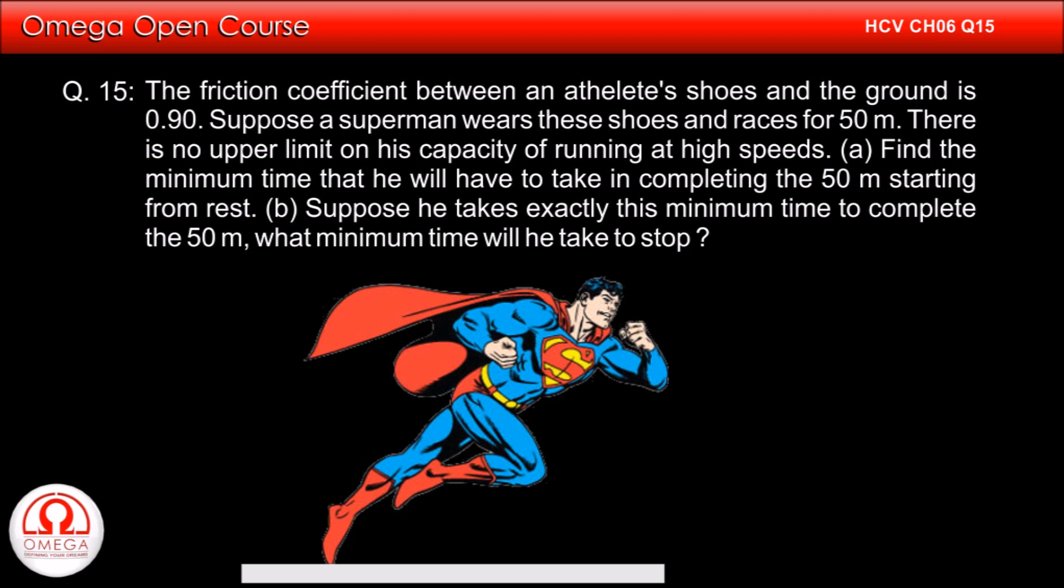The friction coefficient between an athlete's shoes and the ground is 0.9. Suppose Superman wears these shoes and races for 50 meters. There is no limit on his capacity of running at high speeds.